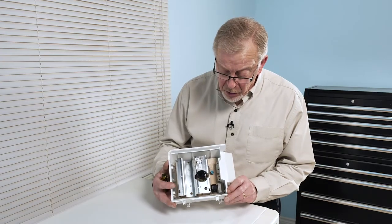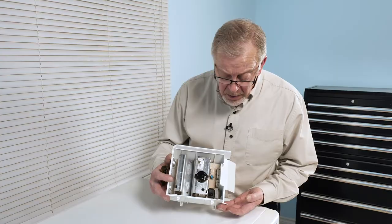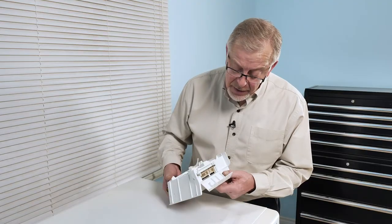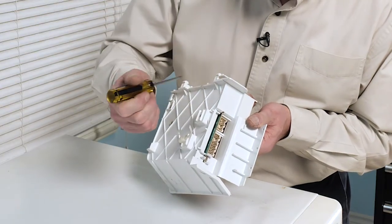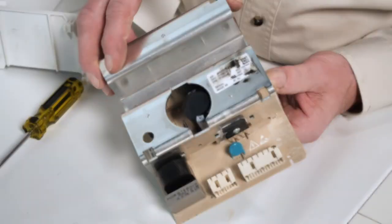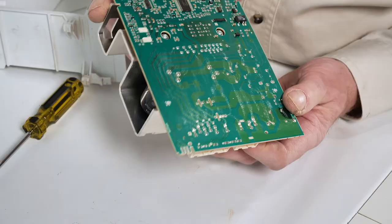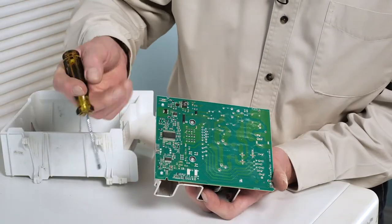This is a typical motor control board or motor control unit from a front load washer. Once we've removed that, well, first of all, check for any signs of corrosion around the input and output terminals. There's nothing evident there. You can also pop that board out of that housing and we'll further inspect the back side of it to see if there's, again, any signs of corrosion or arcing.